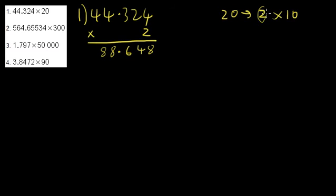So I've done my times 2, now all I need to do is just do my times 10. And times 10 is really easy because now all I need to do is take my decimal place and move it one decimal place to the right. So this is going to give me 886.48.